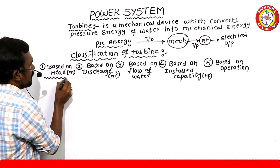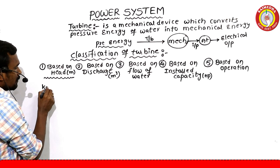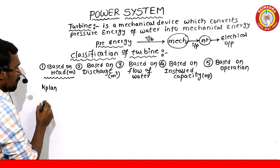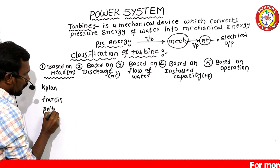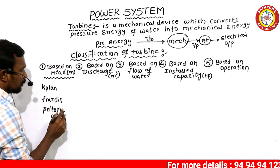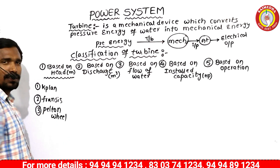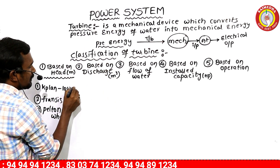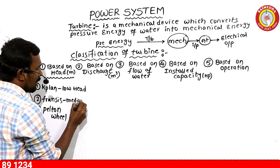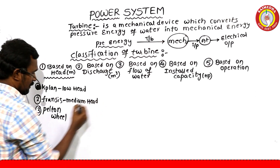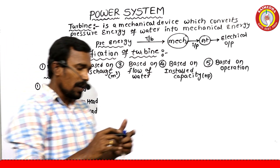First, based on head: the Kaplan Turbine is a Low Head Turbine, the Francis Turbine is a Medium Head Turbine, and the Pelton Wheel Turbine is a High Head Turbine.